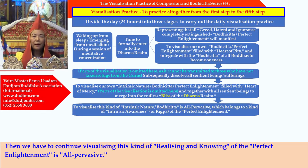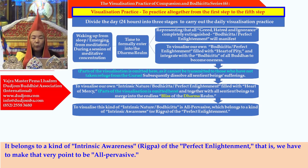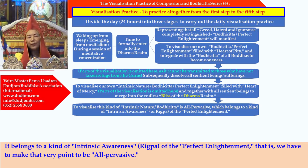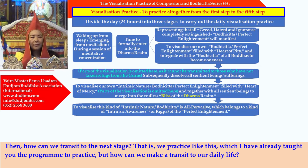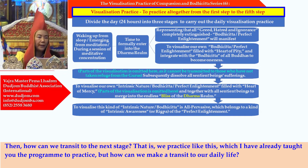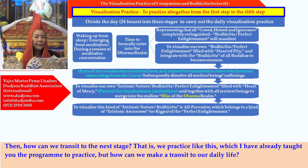We then continue visualizing this kind of realizing and knowing of the perfect enlightenment as all-pervasive. It belongs to a kind of intrinsic awareness — Rigpa — of the perfect enlightenment. We have to make that very point all-pervasive. Then, how can we transit to the next stage? That is, how can we make a transit to our daily life? We must add one more visualization — we have to visualize that because we want to save all sentient beings, and so we should arouse the aspirational bodhicitta.